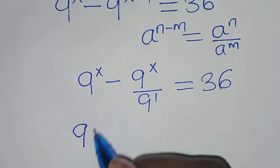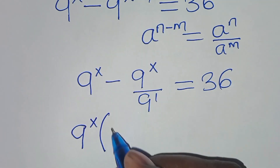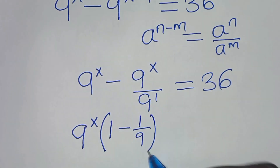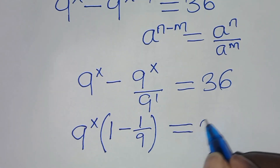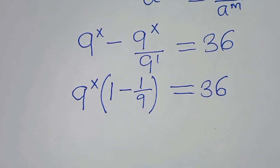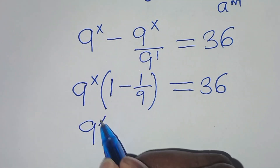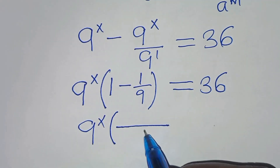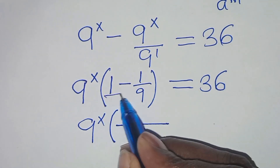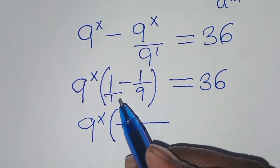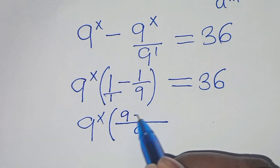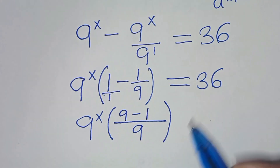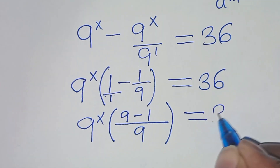Now 9 to the power of x is common here, so let's factor out 9 to the power of x, so that in the parentheses we have 1 minus 1 over 9, equal to 36. The LCM here is 9; 1 is a whole number so 9 divided by 1 is 9 times 1, which is 9, minus 9 divided by 9, which is 1, all over 9. This equals 36.